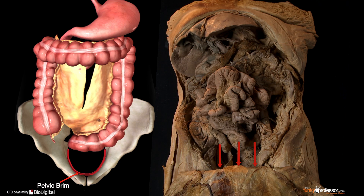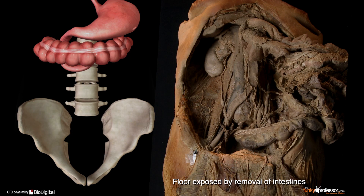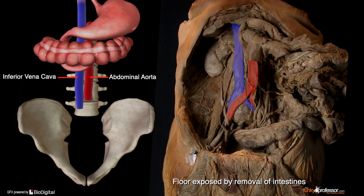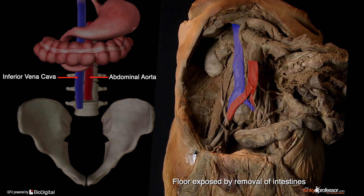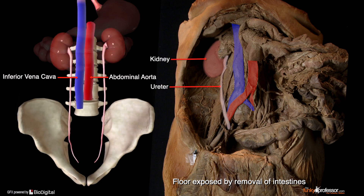Running in the floor of both the supracolic and infracolic compartments are important tubular structures. In the midline, related to the lumbar vertebral column, are the abdominal aorta and, to its right, the inferior vena cava — two large and very important vascular channels. Laterally, on either side, is the excretory tract comprising the kidney and ureter of that side. Sitting atop the upper pole of each kidney is the corresponding suprarenal gland. These are the contents of the supracolic and infracolic compartments, and the structures running in the floor of both compartments.